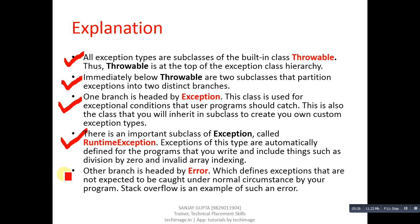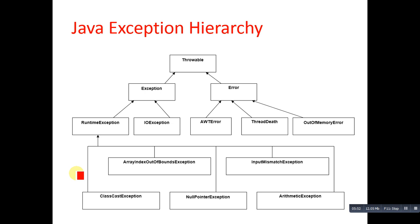The other branch is headed by Error, which defines exceptions that are not expected to be caught under normal circumstances by your program. Stack overflow is an example of such an error. So the Throwable class is divided into two parts: Exception and Error. Exceptions can be handled whereas errors cannot. Exception is further divided into subclasses, and those subclasses are further divided into various subclasses. This is the complete hierarchy of exception handling in Java.